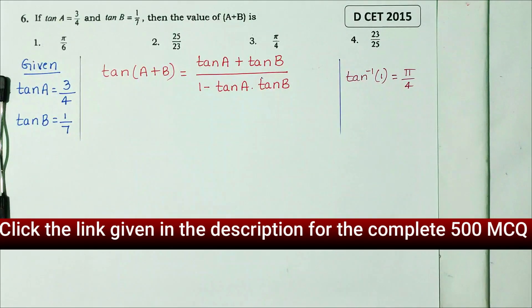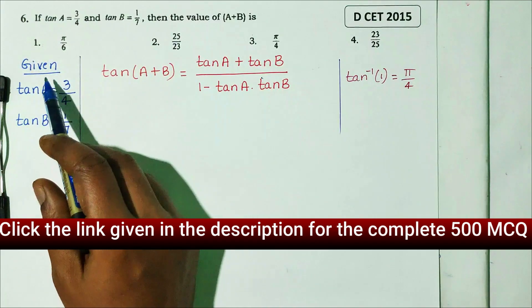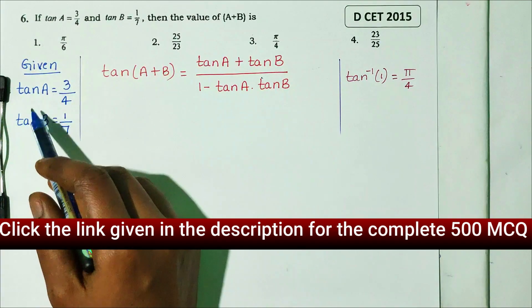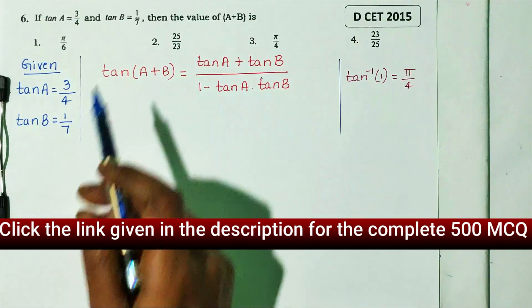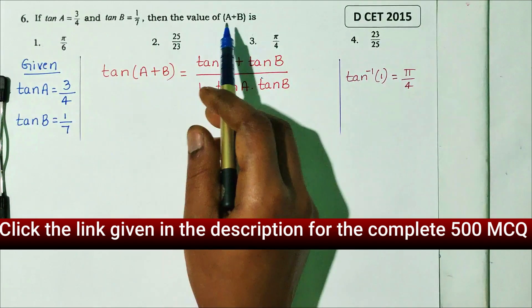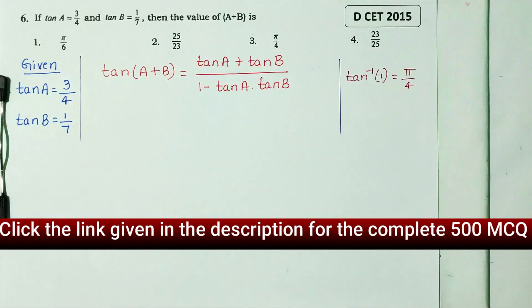Look at the options. Check the correct answer. First note down the given values. tan A and tan B are given. Next, find the value of A plus B.